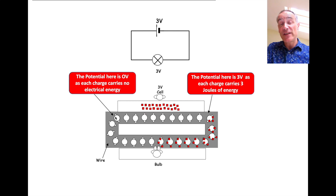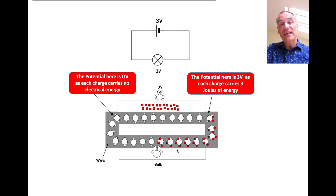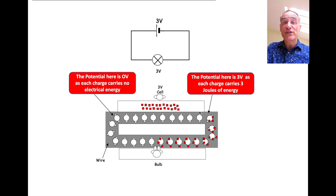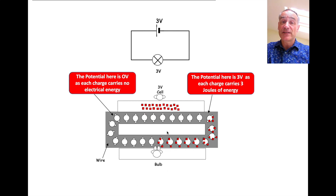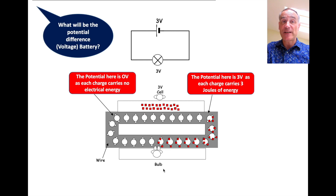The potential when the charges go back is zero, because they've given their three sweets - their three joules of energy - to the bulb. So the potential difference across the battery is three volts, and the potential difference across the bulb is also three volts, because the bulb gains three joules of electrical energy.